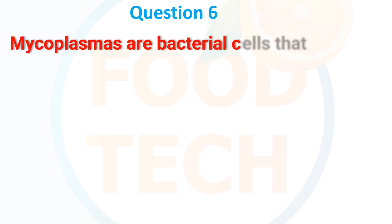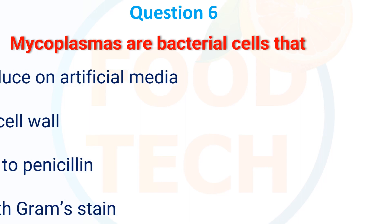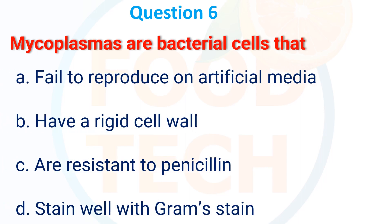Mycoplasma are bacteria cells that: A. Fail to grow on artificial media, B. Have a rigid cell wall, C. Are resistant to penicillin, D. Stain well with Gram stain. The answer is C: Are resistant to penicillin.